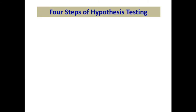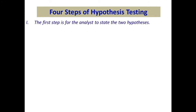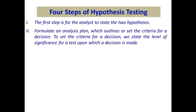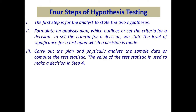There are four steps of hypothesis testing. Step one: the analyst states the two hypotheses so that only one can be right. Step two: formulate an analysis plan which outlines how the data will be evaluated, or set the criteria for a decision. To set the criteria for a decision, we have to state the level of significance for a test upon which a decision is made. Step three: carry out the plan and physically analyze the sample data, or compute the test statistic. A test statistic tells us how far, or how many standard deviations, a sample mean is from the population mean. The larger the value of the test statistic, the further the distance or number of standard deviations. The value of the test statistic is used to make a decision in step four.